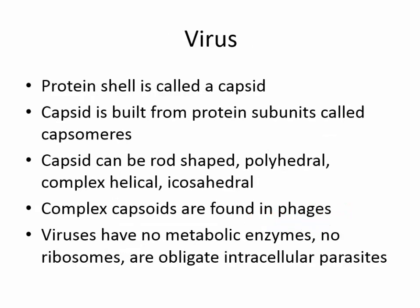A virus is just a bit of protein and a bit of DNA. The protein shell of a virus is called a capsid; the capsid is built from protein subunits called capsomers. Capsids can be rod-shaped, polyhedral, complex, helical, or icosahedral — beautiful shapes. Complex capsids are found in phages. Viruses have no metabolic enzymes, no ribosomes; they are obligate intracellular parasites.